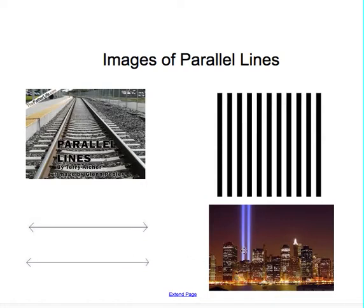This last picture is kind of cool. It is a skyline and it has a skylight, and the skylight has a parallel set of lines — same distance apart and they will never meet. So there are parallel lines all around us in real life objects.